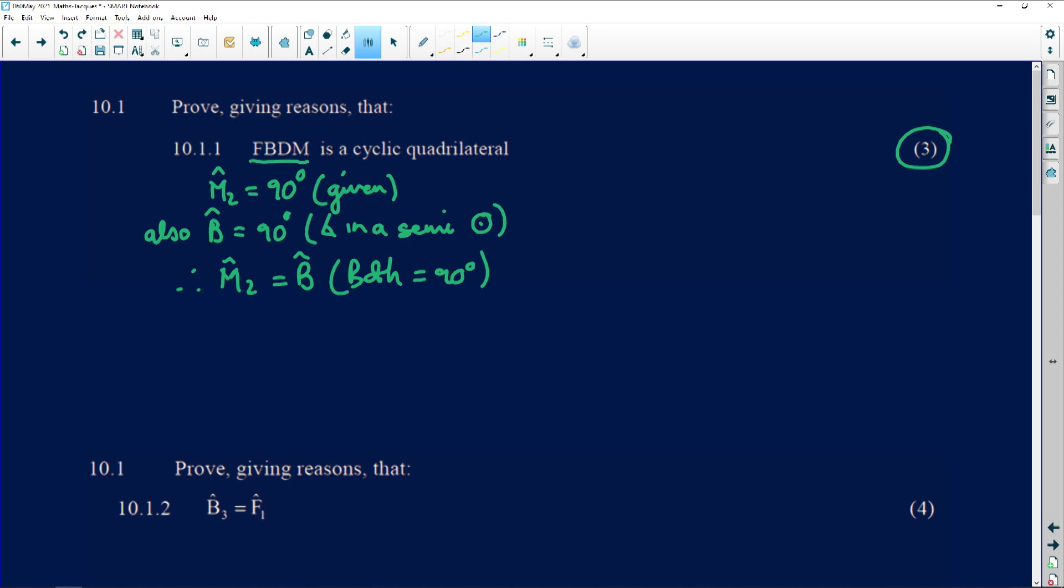Therefore M2 is equal to angle B, why? Because they both equal 90 degrees. Therefore FBDM is a cyclic quad, and the reason is the exterior angle is equal to the opposite interior angle of the quadrilateral. That's how it became a cyclic quad. And remember, after that there were two or three more things that happened after that thing became a cyclic quad.